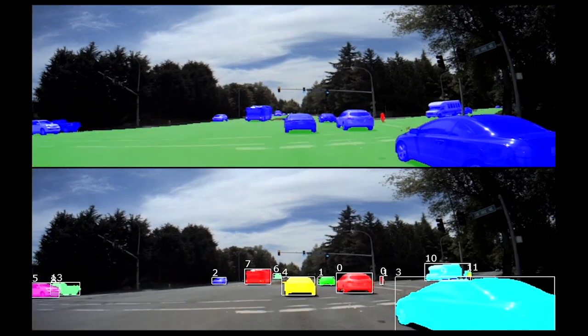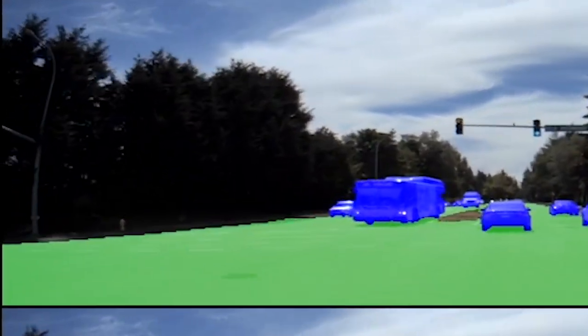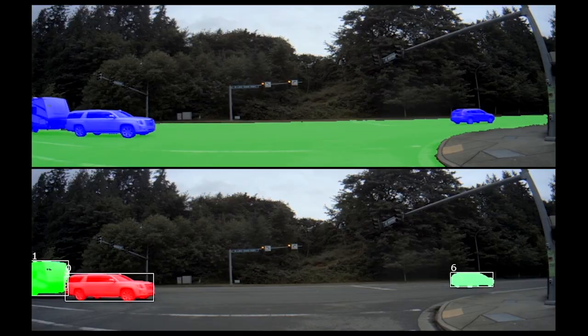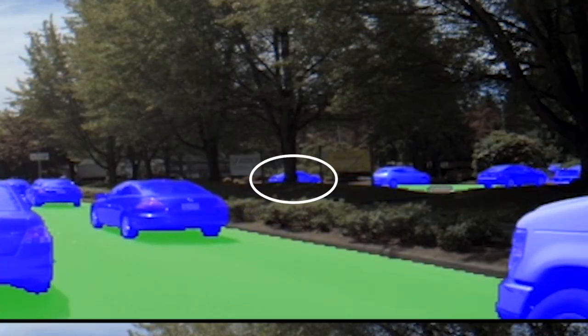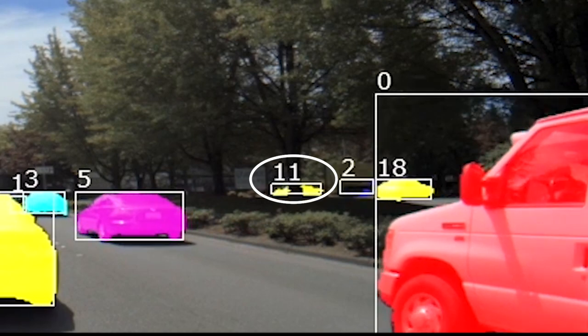We detect object shape details, including the rearview mirror on the bus coming towards us, unusually shaped trucks, and the precise shape of a trailer. And despite occlusion by the tree, this car is still detected as a single instance.